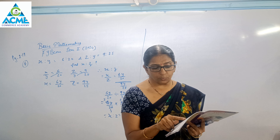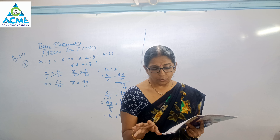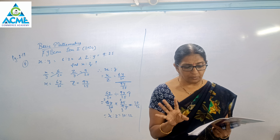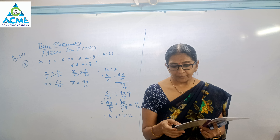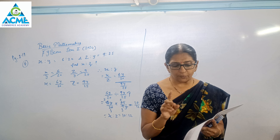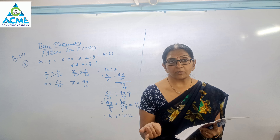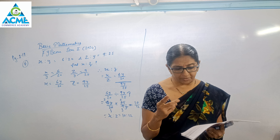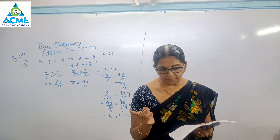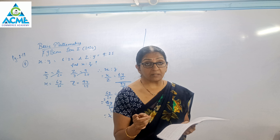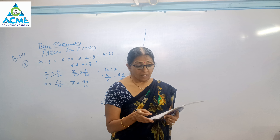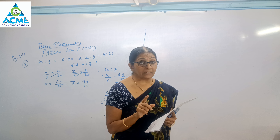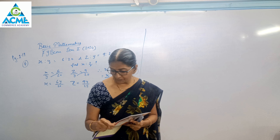A student has scored 40% of marks to get throughout — meaning to pass, he has to get 40% marks. If he gets 40 marks and fails by 40 marks, then find the maximum marks set for the examination.